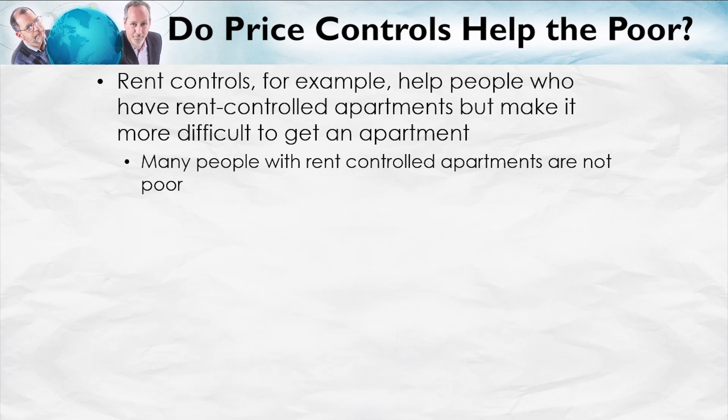One might agree with everything said so far but still feel that maybe price controls help the poor. And for some of the poor, this is probably true. Rent controls help people who have rent-controlled apartments, but they make it more difficult to get an apartment — there's a real trade-off. Moreover, many people with rent-controlled apartments are not poor. There are lots of rich people in New York City who have rent-controlled apartments and won't give them up because they're a great deal. So rent control is not a very targeted approach to helping the poor.